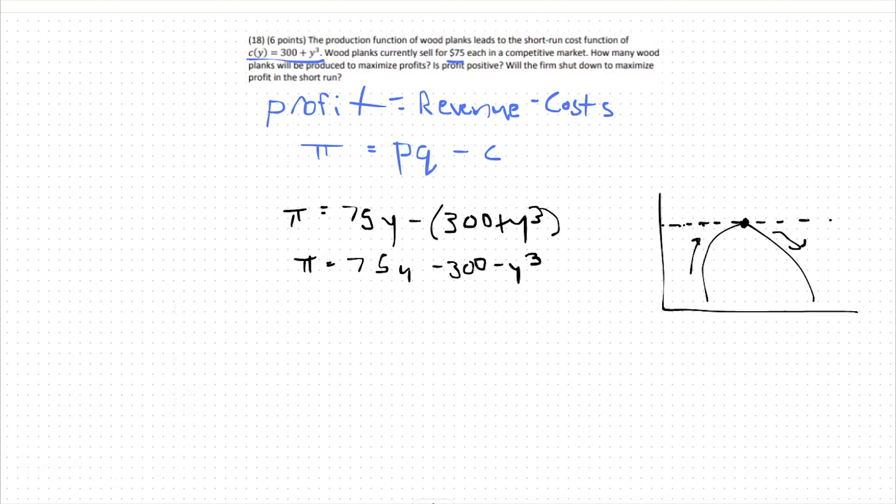The profit function is no different. At the highest point of my profit function, my slope will be zero. So in order to find my maximum profit, I should take the derivative of my profit function and set it equal to zero, and we're going to do that with respect to y. So derivative of profit function with respect to y equals zero. In this case that would be 75 minus 3y squared would be our derivative. Again, notice that this 300 goes away because there's no y attached, so it's treated as a constant.